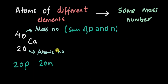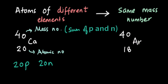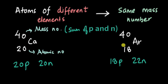Let's take one more atom. We can have argon, which has a mass number of 40 and an atomic number of 18. The number of protons is 18, but the number of neutrons is 40 minus 18, which is 22 neutrons. Again, the mass number is still 40.